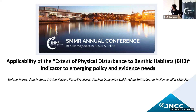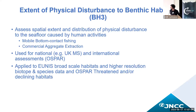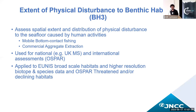In the next 10 minutes or so, I will give you an overview of the methodology of an indicator for physical disturbance and also show some examples of its applicability. The extent of physical disturbance to benthic habitats indicator, also known as BH3, is a risk indicator that aims to assess the spatial extent and distribution of physical disturbance to the seafloor caused by human activities. At present, the indicator only focuses on mobile bottom-contacting fishing and commercial aggregate extraction pressures. This indicator was developed under the OSPAR framework, but it's also being used for marine assessment, including the UK marine strategy. The methodology is applied at the highest habitat resolution possible and then summarized at broad scale habitat type. It can also be used to assess disturbance on listed OSPAR threatened and declining habitats.